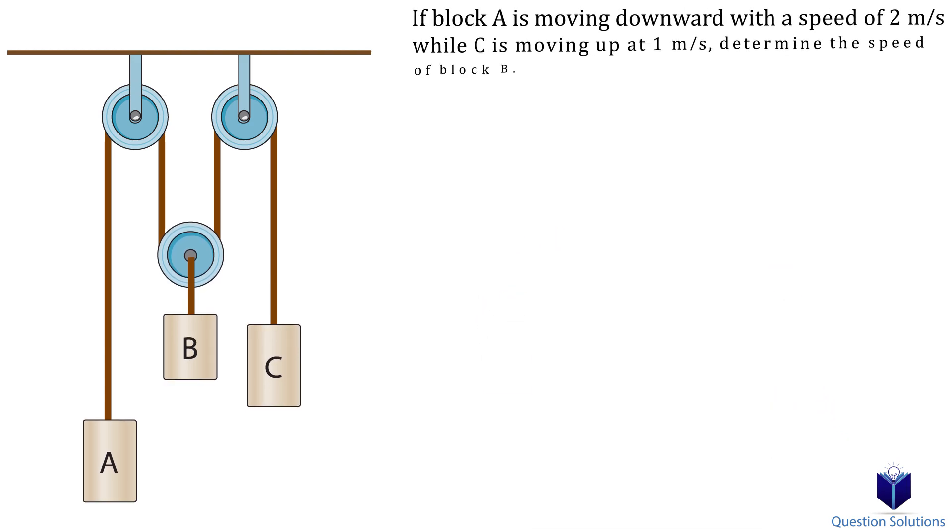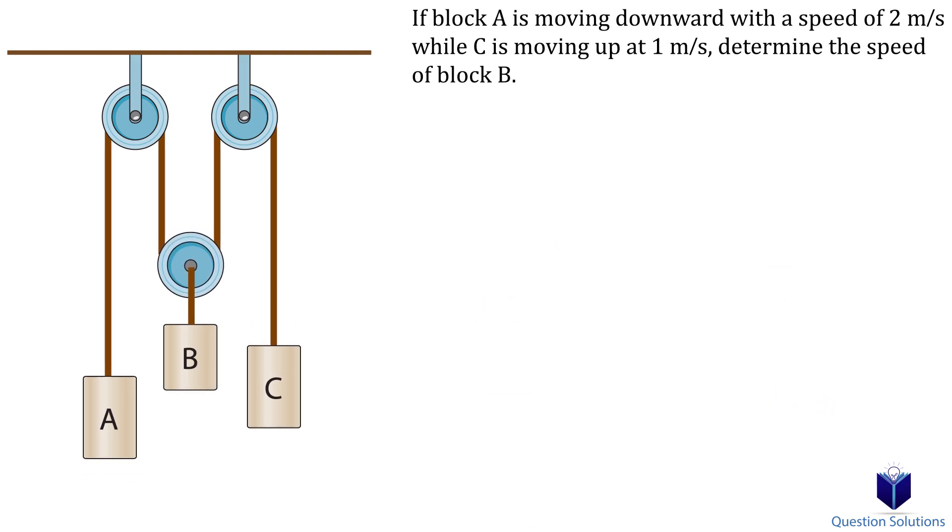In this example we need to find the speed of block B. So the first thing we have to do is to draw a reference line also called a datum. What that means is for every part that is moving or changing in length we can say its position with respect to the datum. The datum is always placed in a location where it doesn't move. In this example you can see that the top pulleys are fixed to a wall. That means no matter what cable is pulled they don't move.